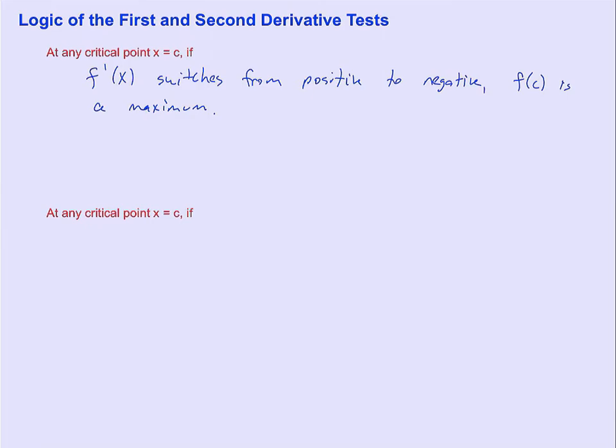Just a quick drawing to show what that looks like. Here's c. The reason why c is a critical value is because f prime of c, the derivative at that point, is zero. You can see there's a horizontal tangent here.